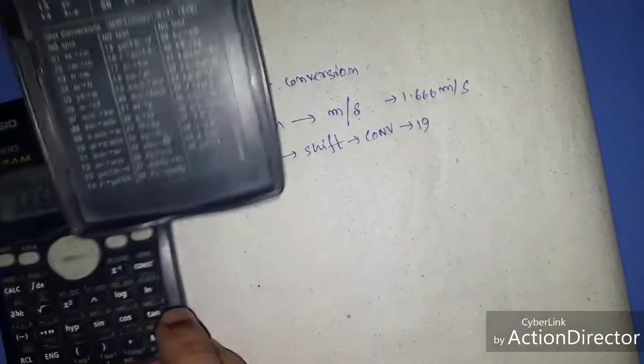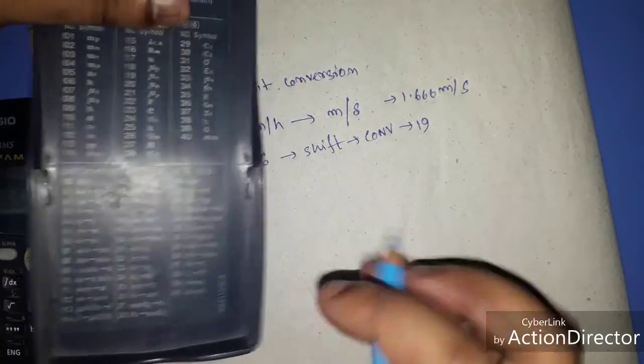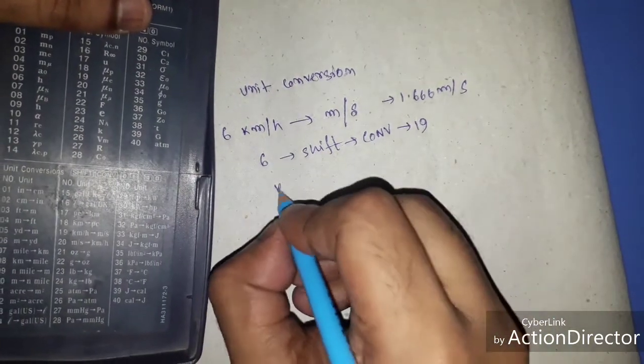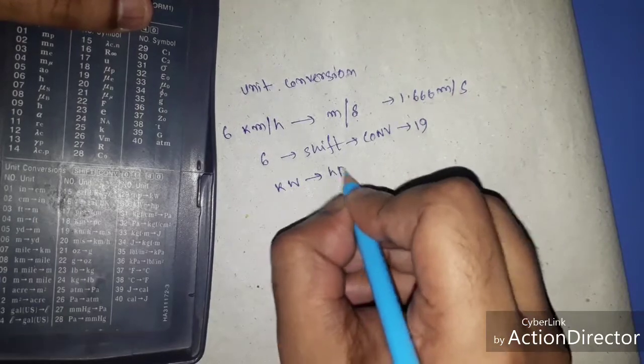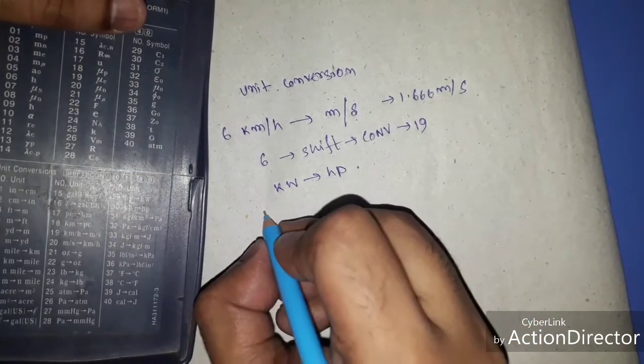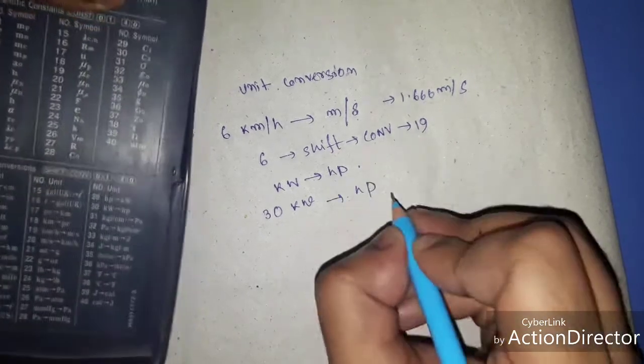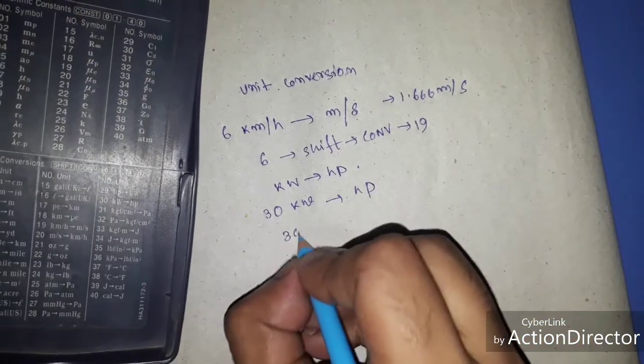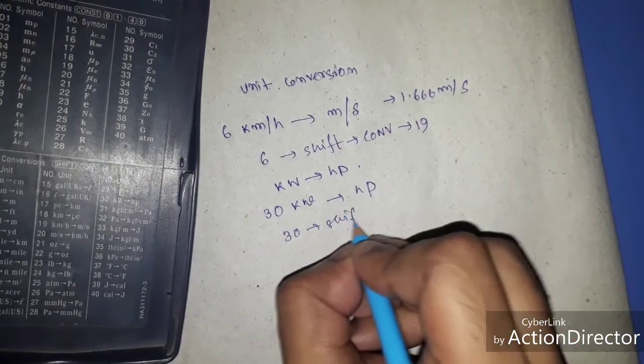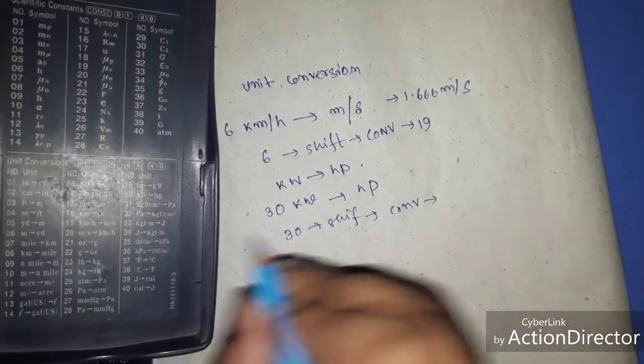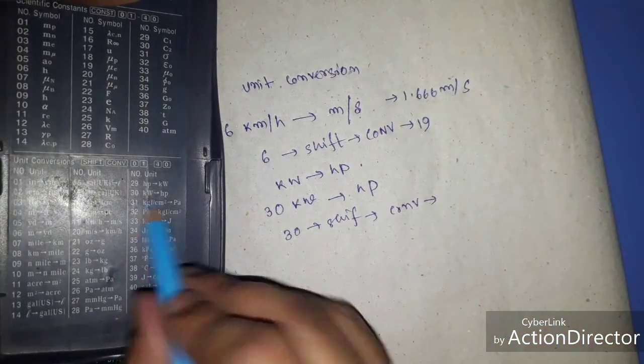So let's try another example. If we want to convert kilowatt to horsepower, so consider 30 kilowatts I want to convert in horsepower. So simply just 30, after that shift, after that Conv and its respective number.